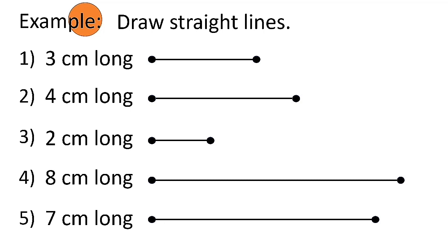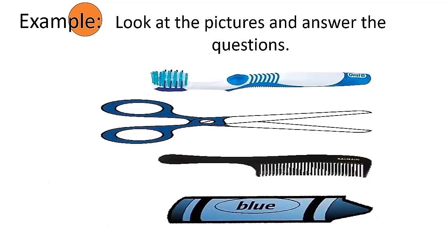Next example: look at the pictures and answer the questions. As you can see, we have a toothbrush, scissors, a comb, and a crayon — so there are four things. You have to measure each item and then write its measurement to answer the questions.